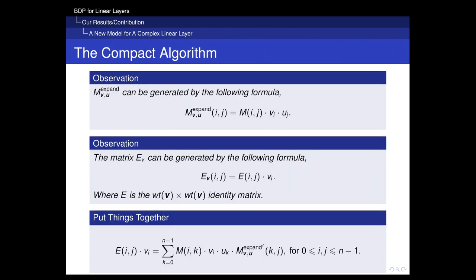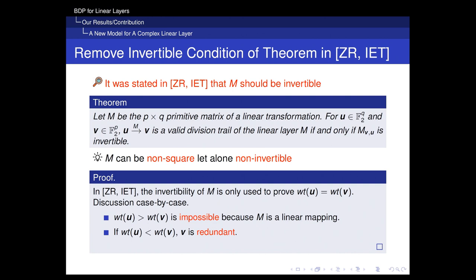The last step is to put all things together and make a compact algorithm based on several observations. For example, the M^{VU}_expand matrix can be generated by a specific formula, and E_V can be written in a compact form. We also found that we can remove the invertible condition from Jeon and Raymond's theorem, making our method suitable for non-invertible matrices as well. The concrete proof can be found in our paper.